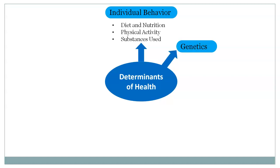The second determinant is genetics — inherited traits. Genetic factors may influence susceptibility to certain health conditions. This is a major factor which determines the health of a person.